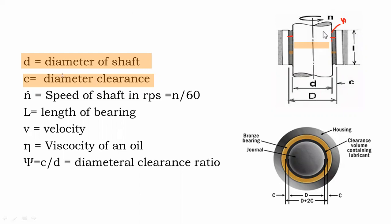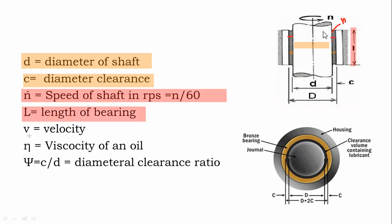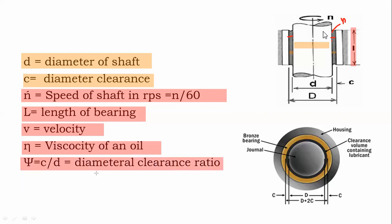N' (n-dash) is the speed of the shaft in revolutions per second (rps), which equals rpm divided by 60. L is the length of the bearing, v is the velocity, eta (η) is the viscosity of the oil, and psi (ψ) = c/d, which is the diametral clearance ratio. These are all the notations used for the derivation.